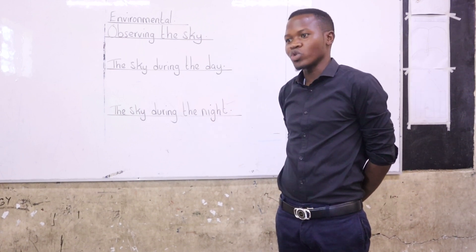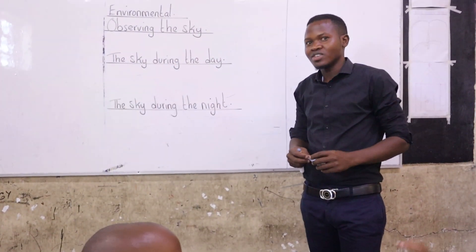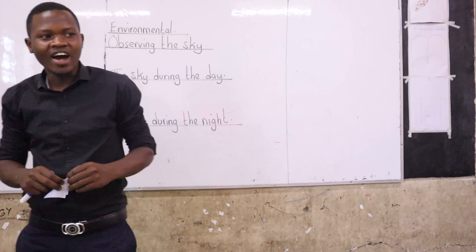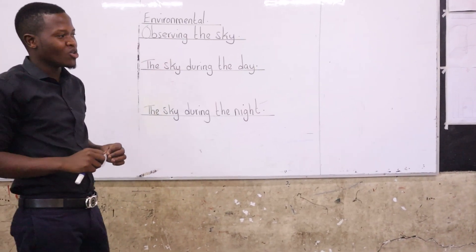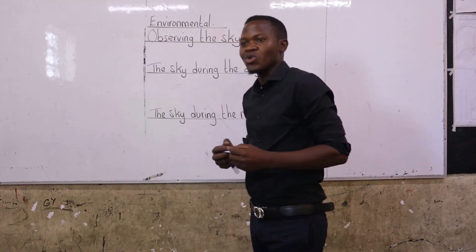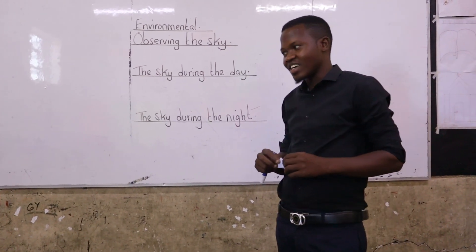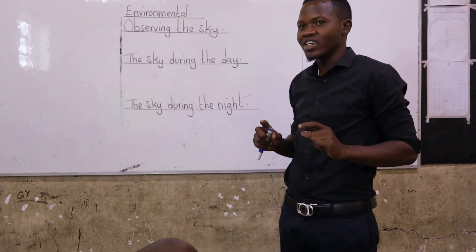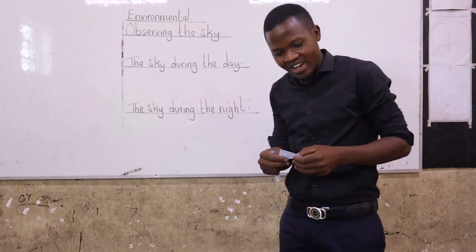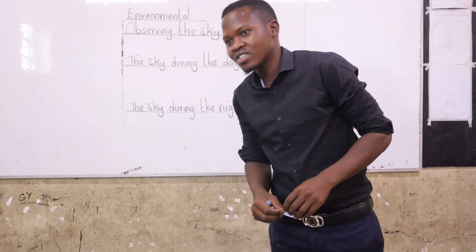There is a song that you always sing — Twinkle Twinkle. How many know it? Can we sing it together? Twinkle, twinkle, little star. How I wonder what you are. Up above the sky so high, like a diamond in the sky. Twinkle, twinkle, little star. How I wonder what you are. Very good. Clap for yourself.